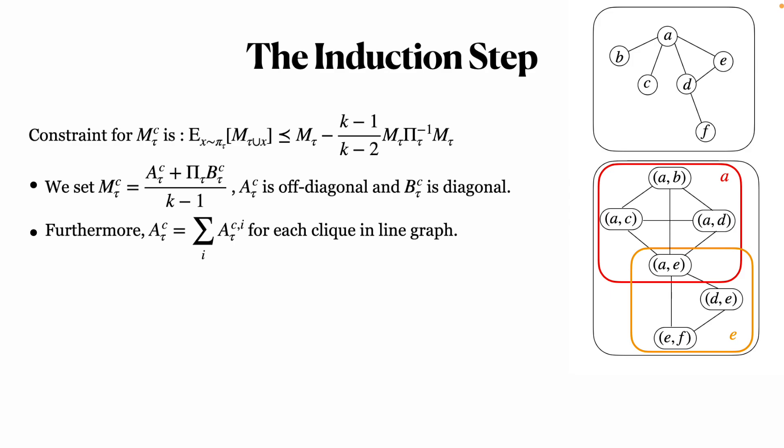For example, for the vertex A, all the edges adjacent to A: (A,B), (A,C), (A,D), and (A,E), compose a clique in the line graph. So, we set a matrix for each vertex in the original graph. That is to say, we consider each clique in the line graph separately. So, the constraint turns into this form.